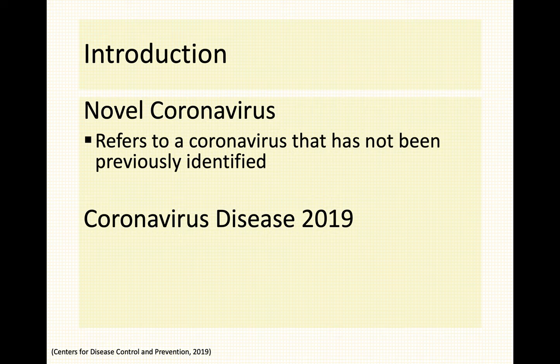By January 7 there was now an identification that there is a novel coronavirus causing coronavirus disease of 2019. It was until January 11 when the first death was recorded. We did not have a name for this disease until February 11 when the WHO issued the new name: coronavirus disease 2019.